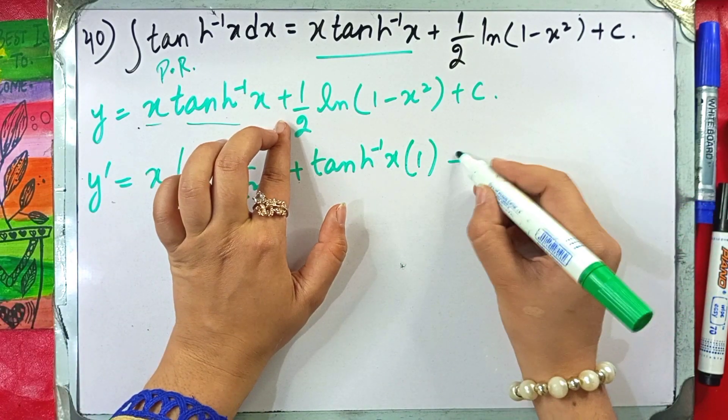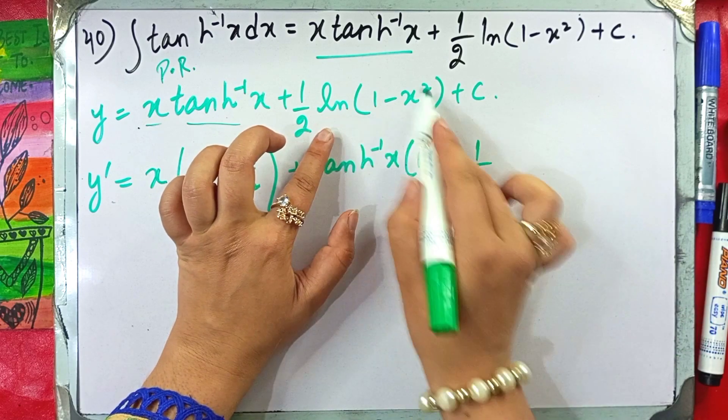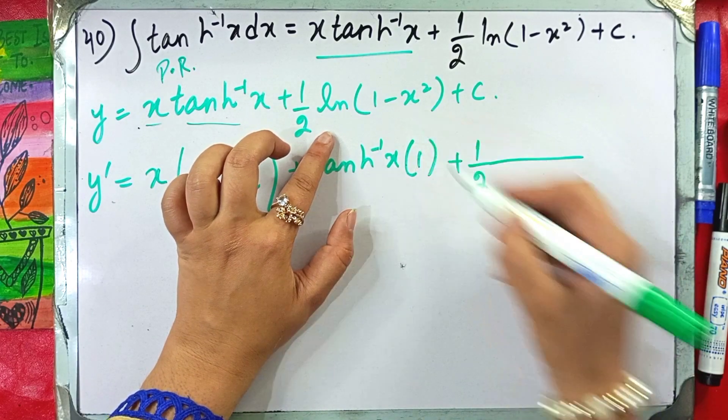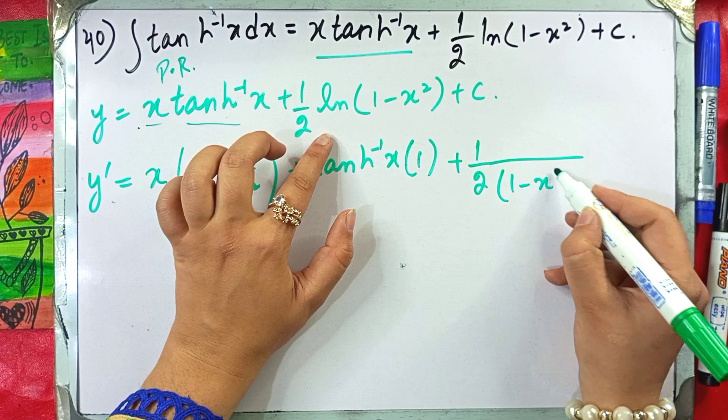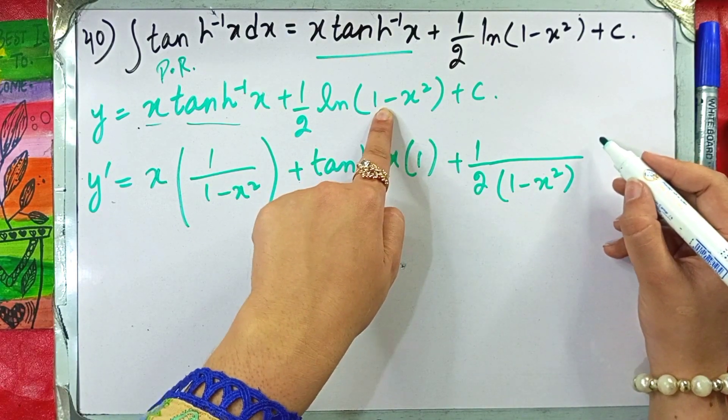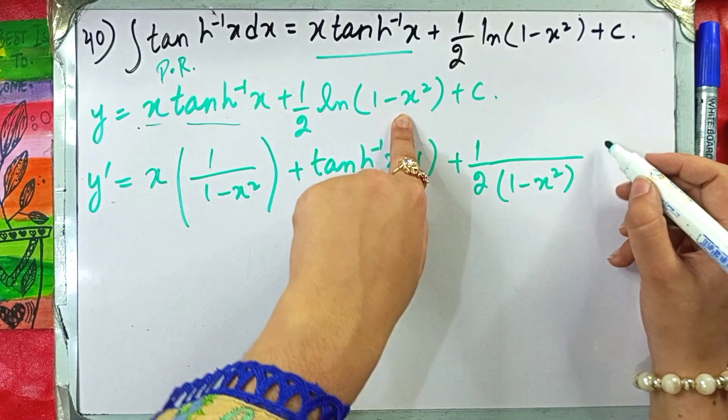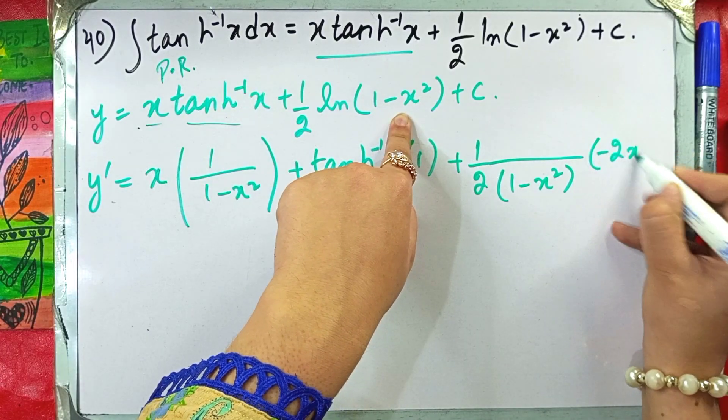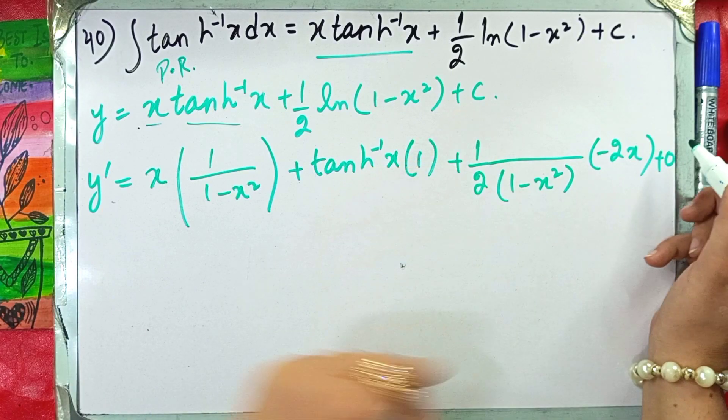And plus one by two. Natural log, if we take the derivative of this, what will happen? This function will come down. And we will take the derivative of this function again. So what will happen? 1 over 1 minus x square, derivative of 1 minus x square. What will happen? Minus two x. Because power rule, constant derivative plus zero.